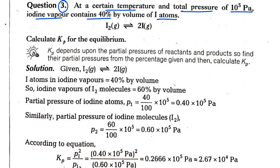The volume is 40% iodine atoms and the total pressure of both gaseous particles is 10 to the power 5 pascals. Now we need to find the Kp value for the equilibrium.